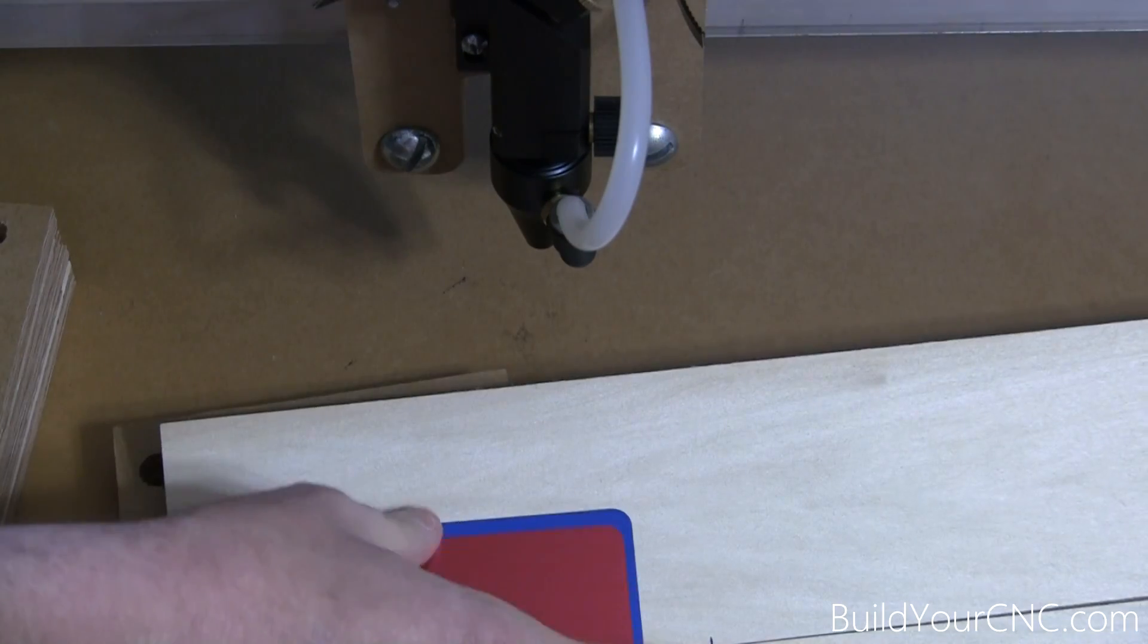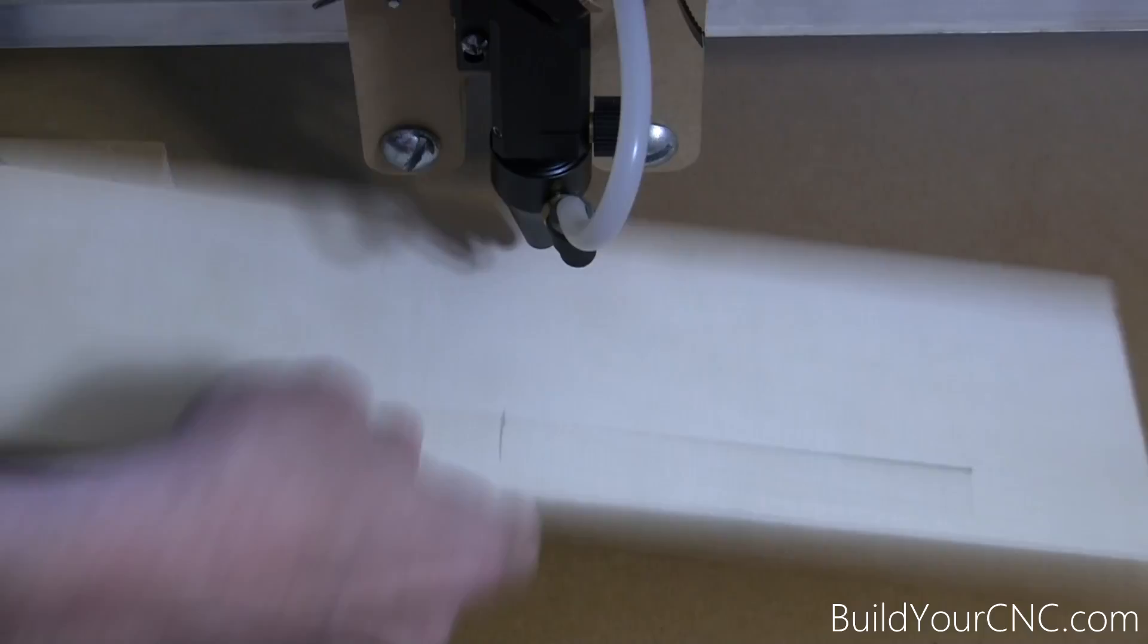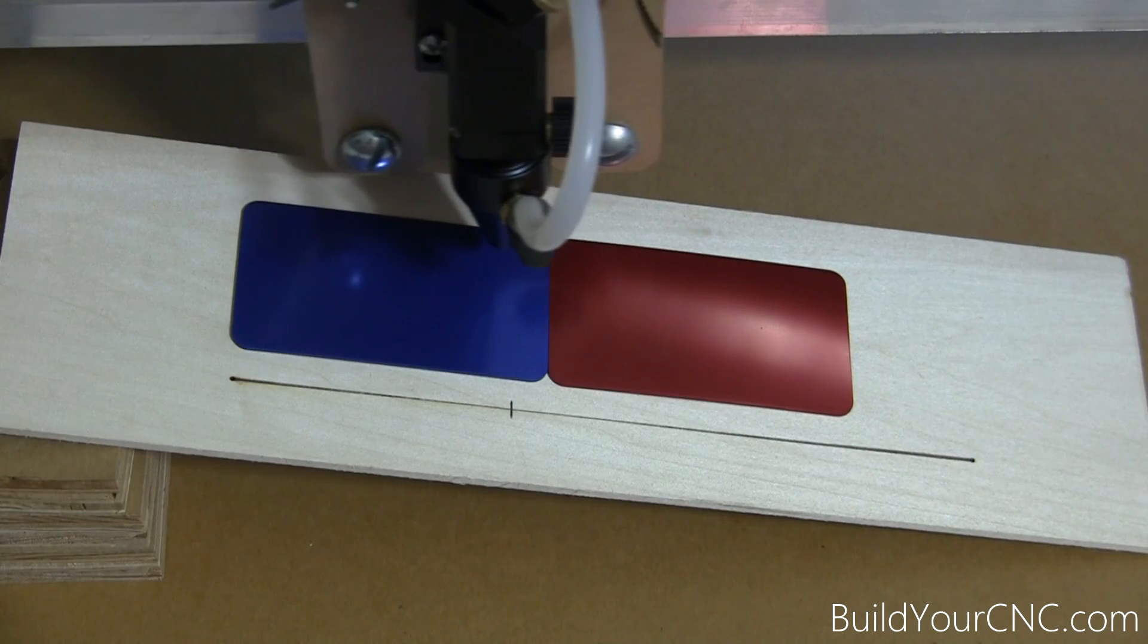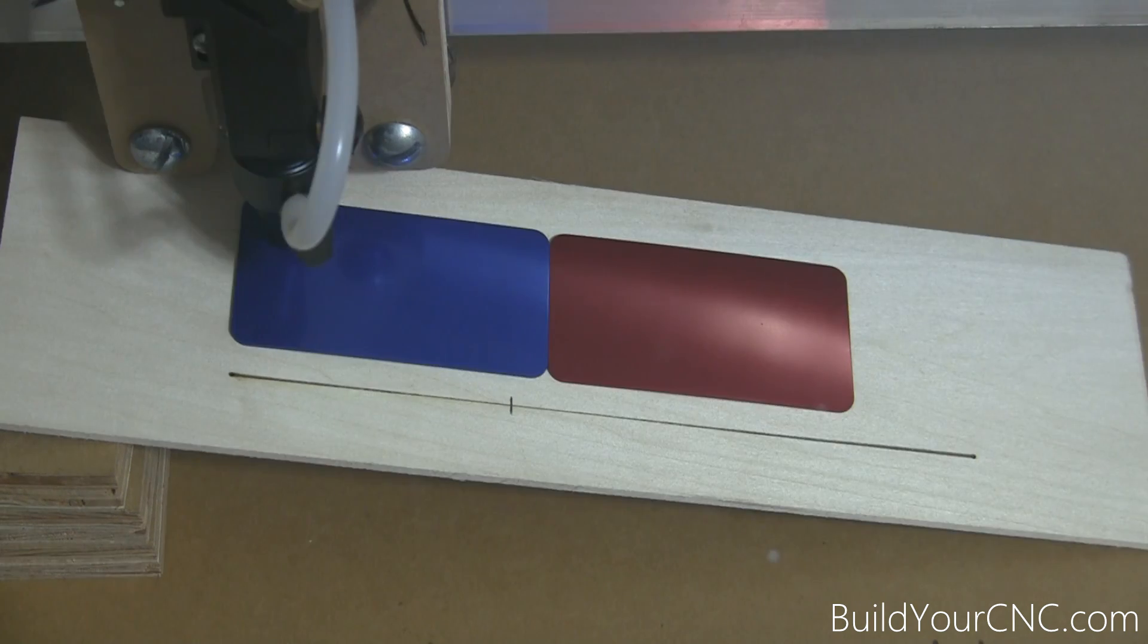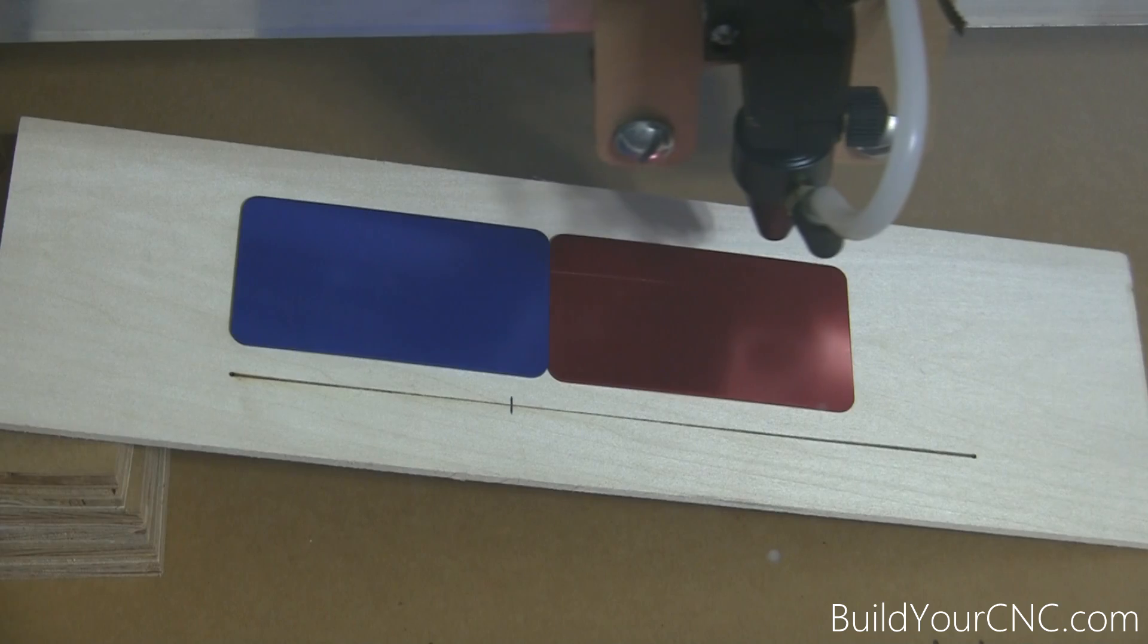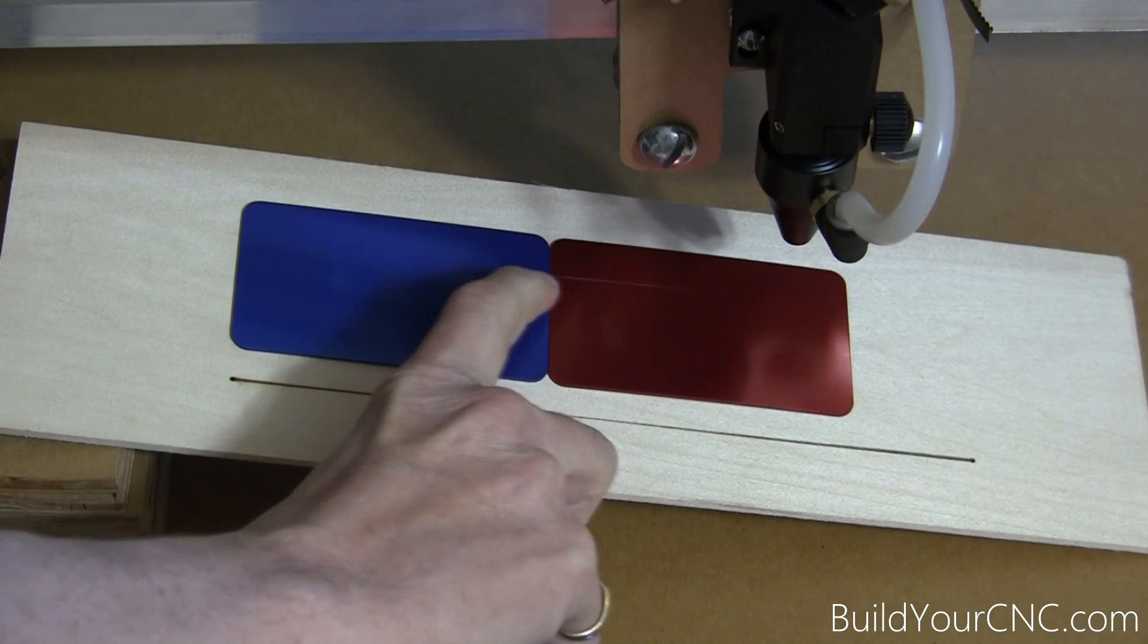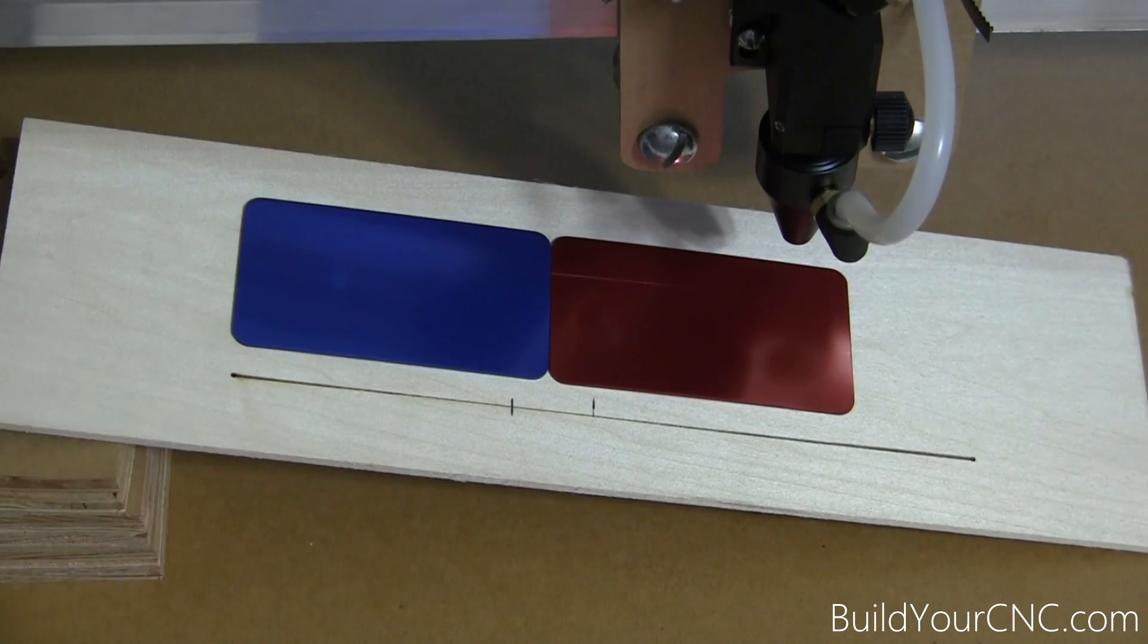I'm going to go ahead and now do the anodized aluminum to see if it's the same. Do the whole process over again. I tried to find the straightest aluminum that I have. Looks like we have a good amount of white along this point. So let's go ahead and measure. That's about right there.